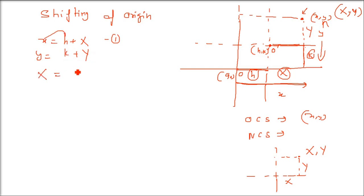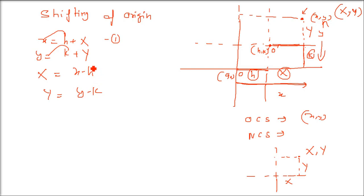So the new coordinate system gives us: capital X equals x minus h, and capital Y equals y minus k. The new coordinate system is the original minus h and minus k. That is, (0,0) has changed to (minus h, minus k). Let us take an example.